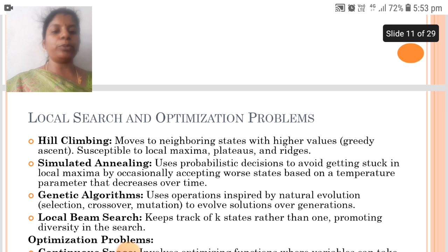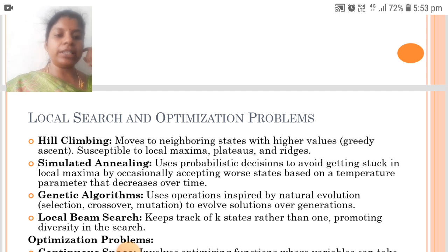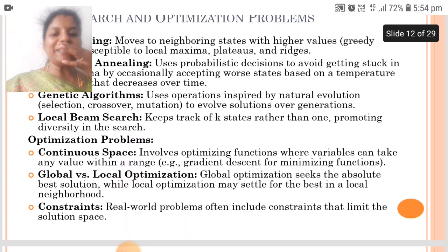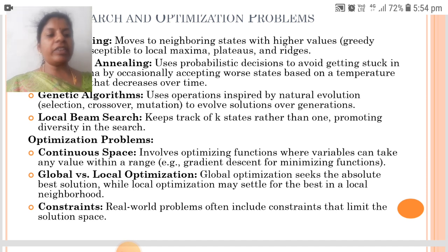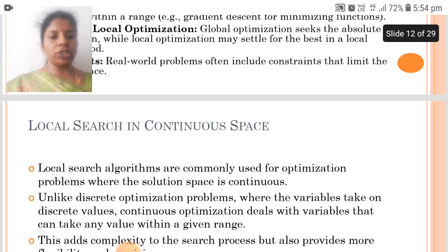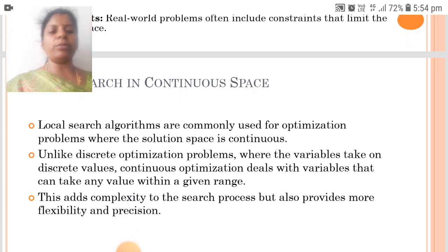Next is local search and optimization problems. Local search techniques include hill climbing, which moves to the neighboring state with higher values; simulated annealing, which uses probabilistic decisions to avoid getting stuck in local maxima by occasionally accepting worse states based on a temperature parameter; genetic algorithms, which use operations inspired by natural evolution to evolve solutions over generations; and local beam search, which keeps track of multiple states. Optimization problems involve continuous space, global versus local optimization, and constraints. Global optimization seeks the absolute best solution while local optimization may settle for the best in a local neighborhood. Real-world problems often include constraints that limit the solution space, and local search algorithms are commonly used for optimization problems where the solution space is continuous.